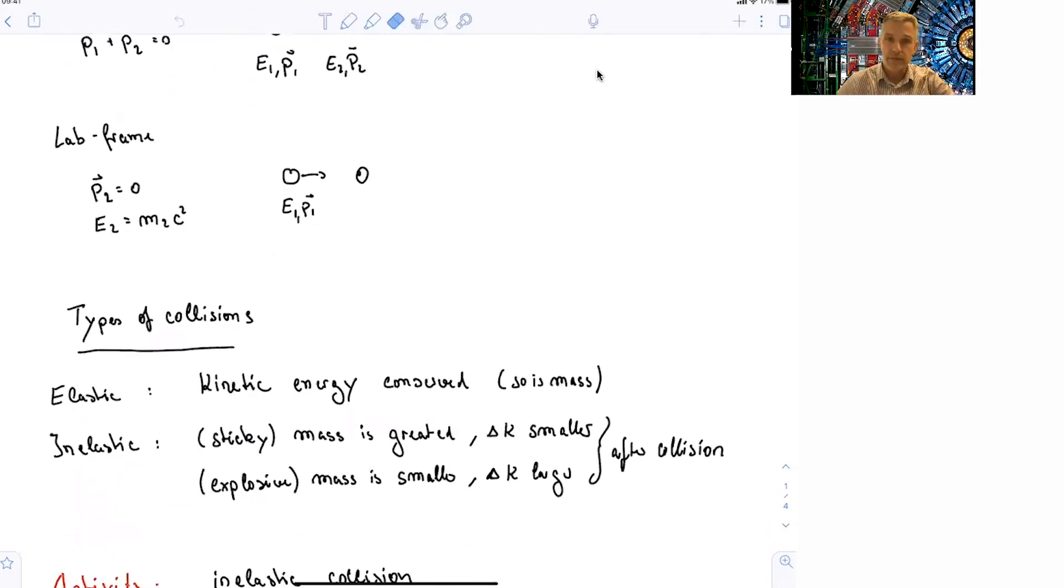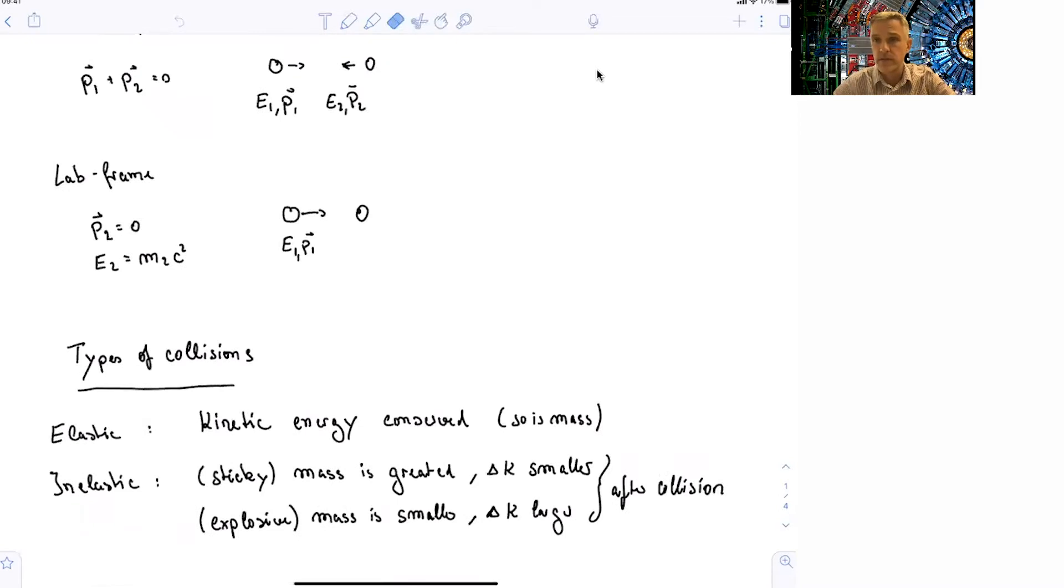But we can also have different types of collisions. We describe or characterize elastic collisions where the kinetic energy is conserved, and so is the mass. So here you can think about two billiard balls colliding without any friction, in which case they don't change their appearance, their mass. Everything is unchanged. They just change the direction.